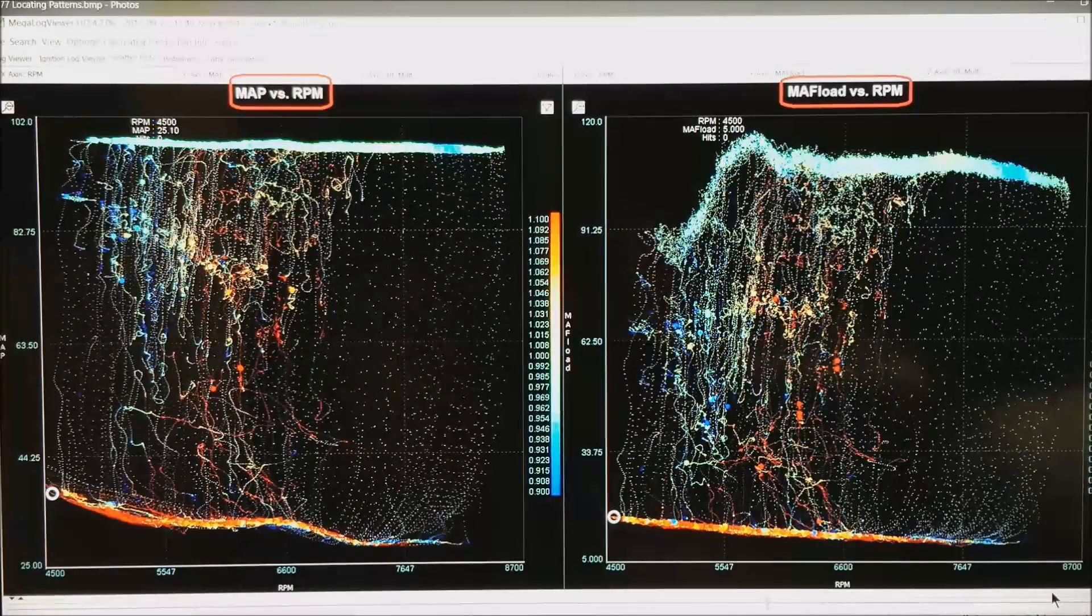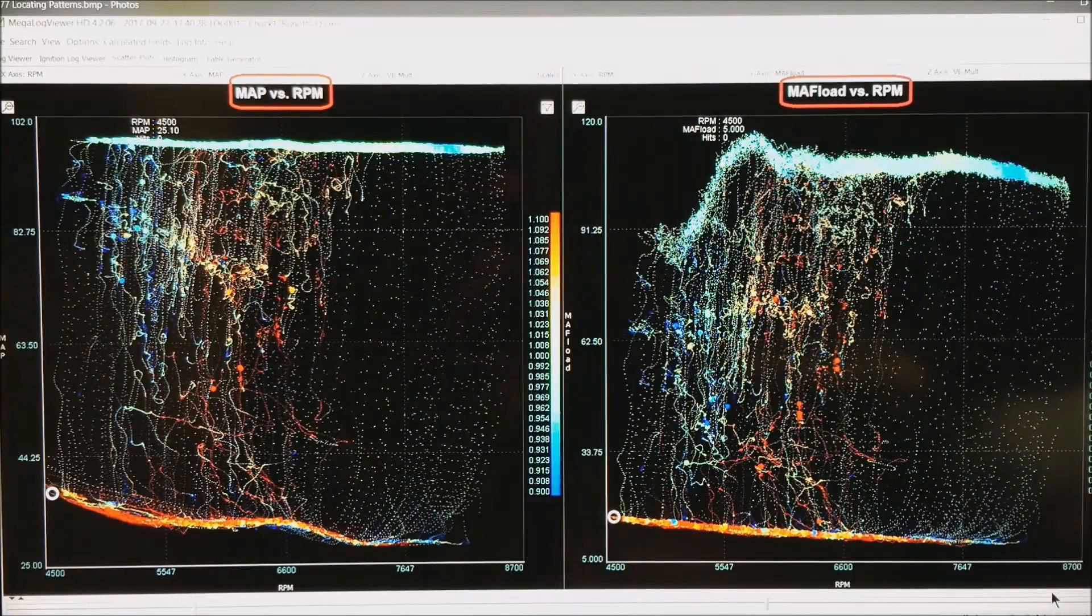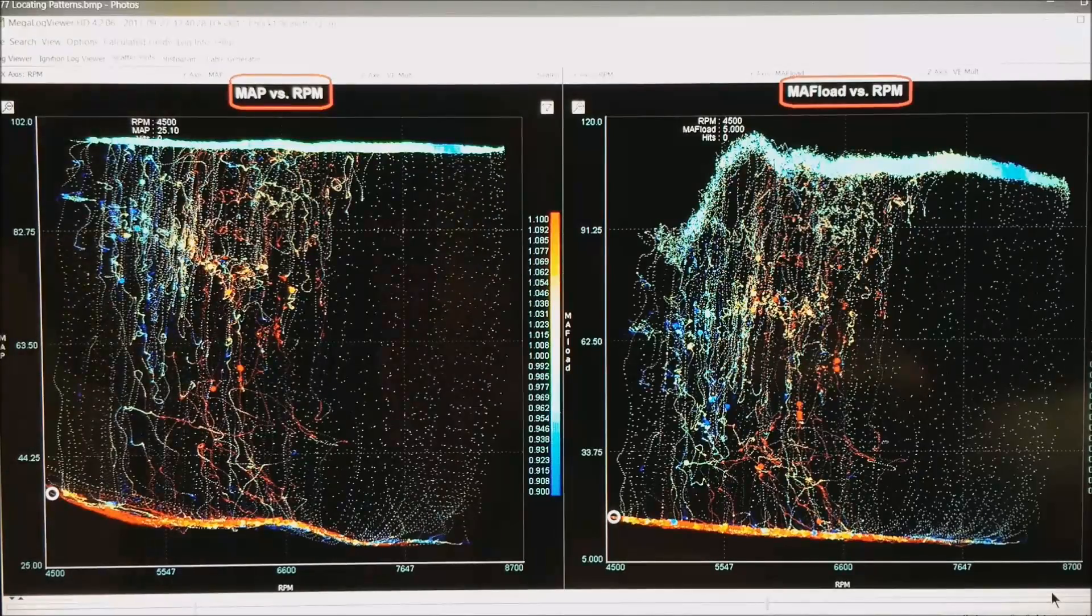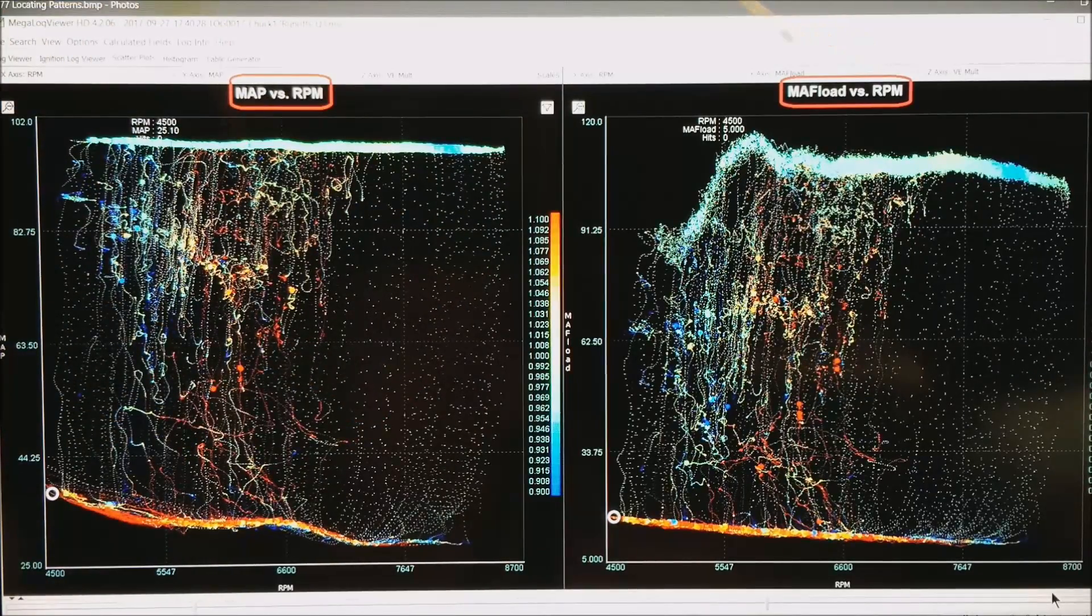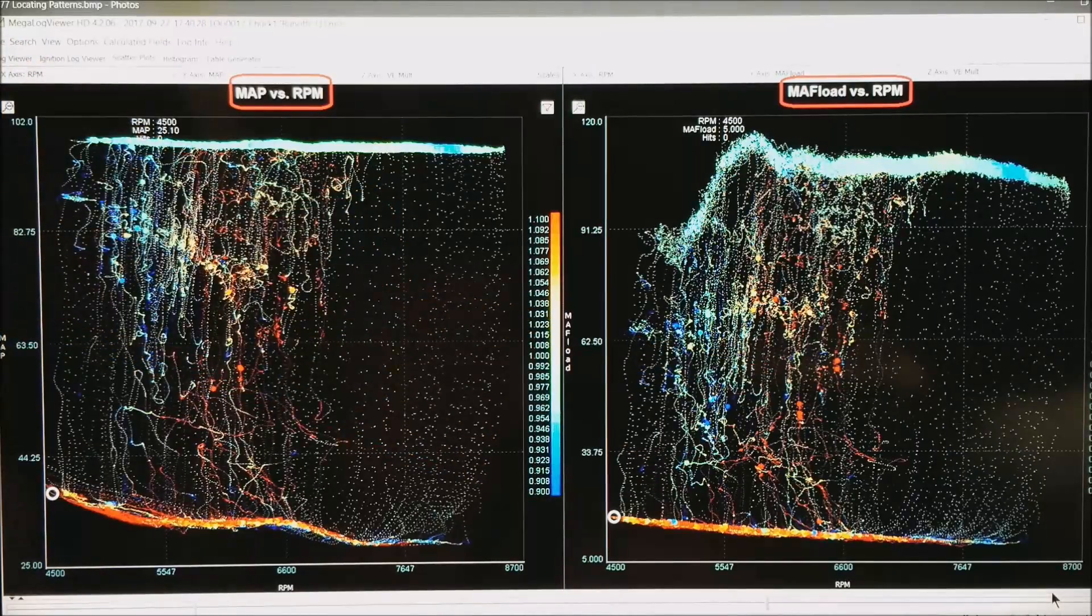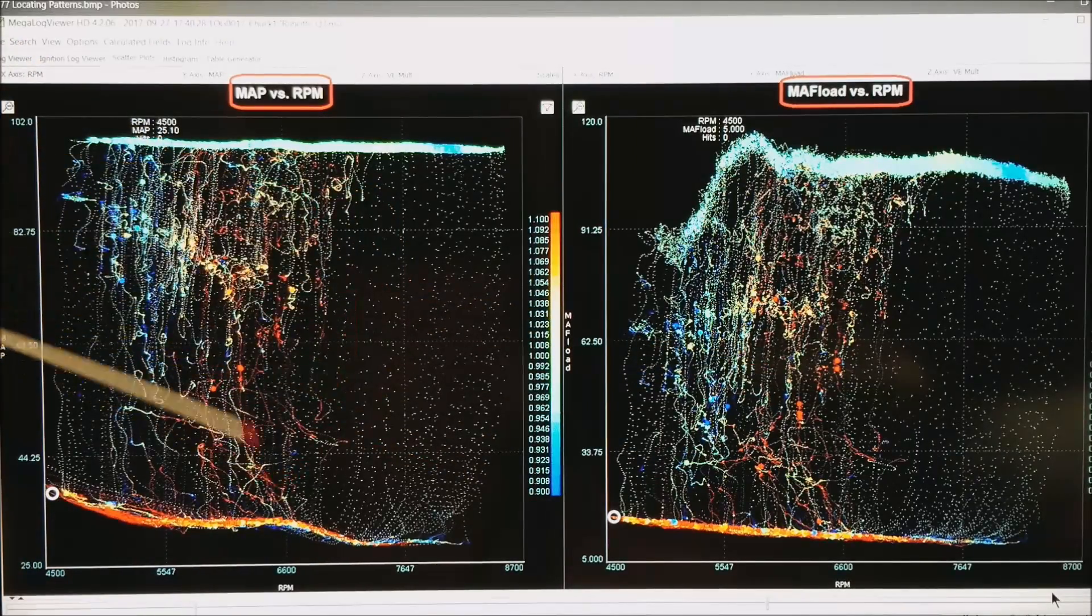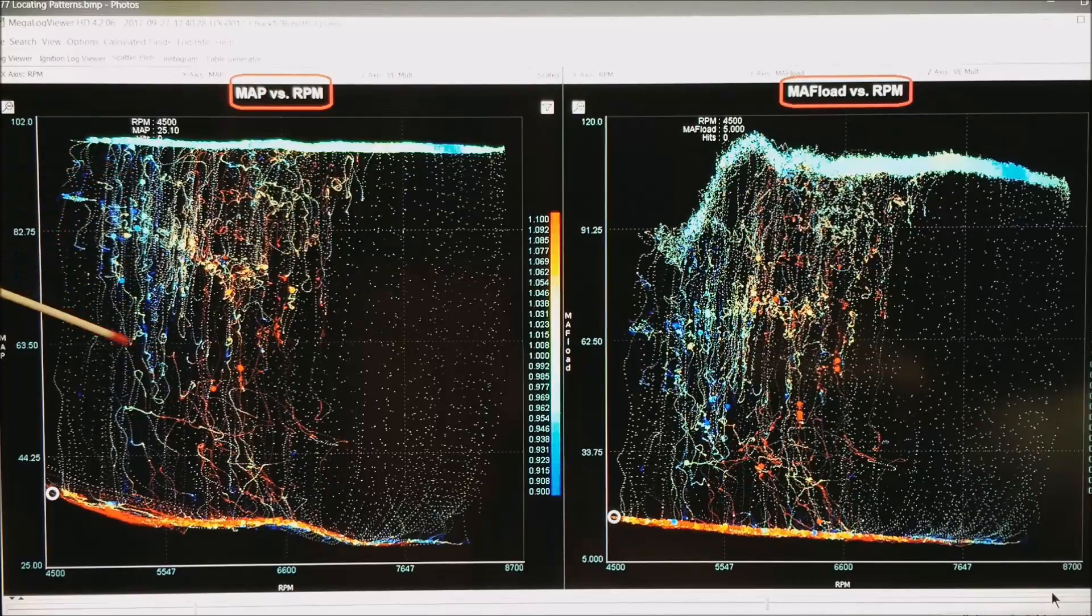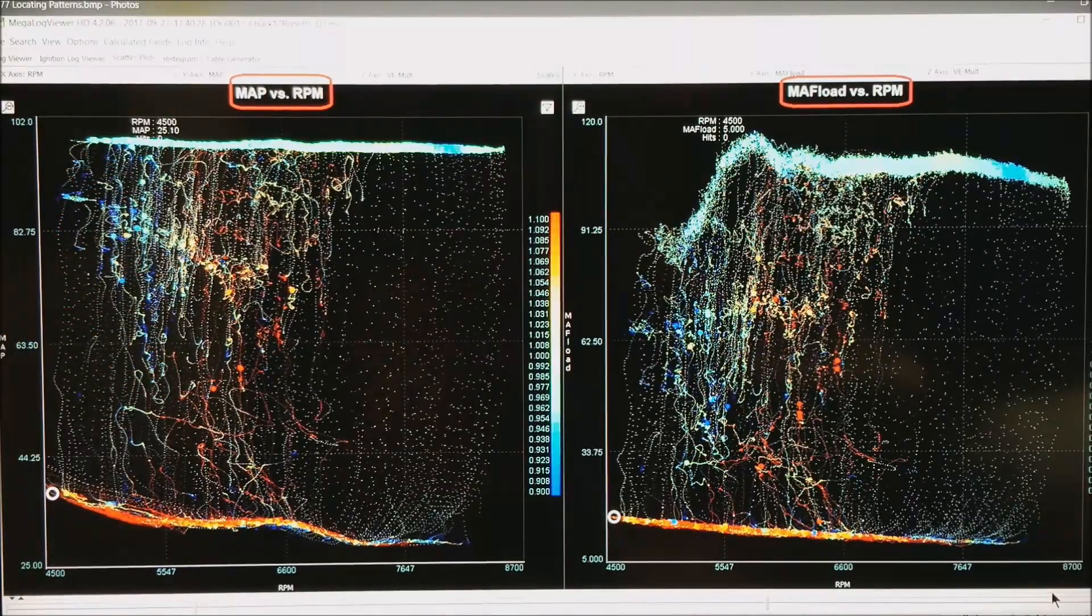This is a plot where on the left side I have got the primary fueling as speed density. On the right it is mass air flow. Notice that both look fairly similar. We are a little bit lean in this area. A little bit rich in this area. But we are getting in the ballpark.